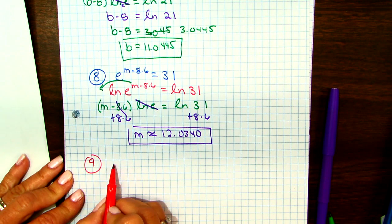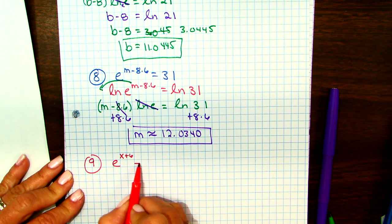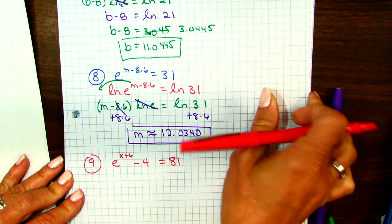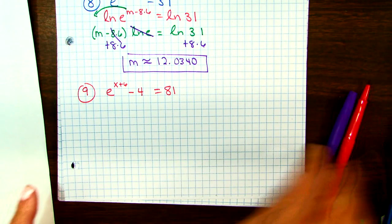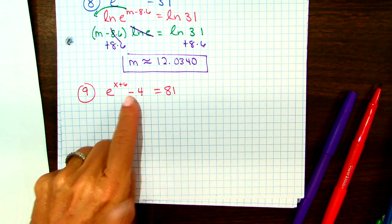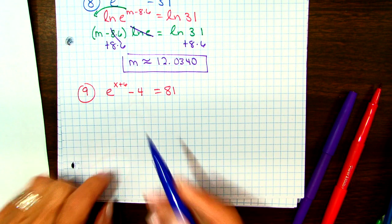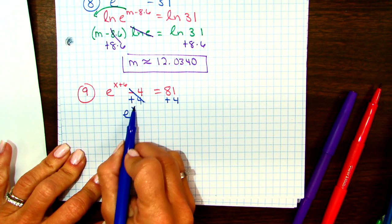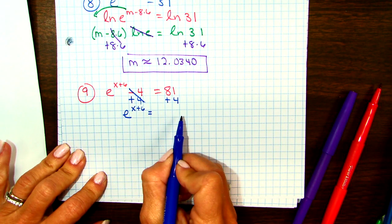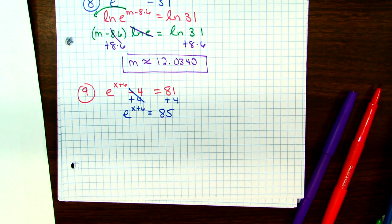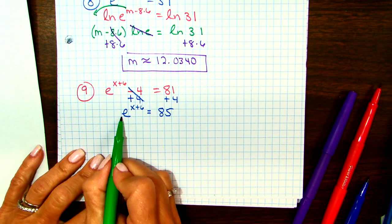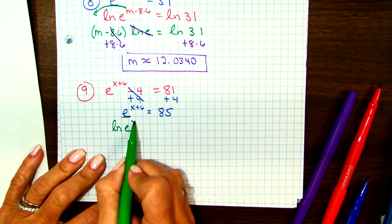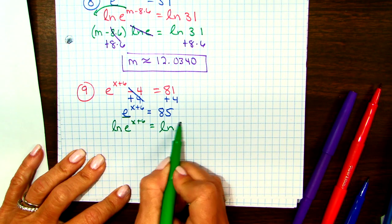E to the x plus 6 minus 4 equals 81. This one, notice, is different from 7 and 8 because it's got that minus 4 there. Before we start the problem, before we do the log part of the problem, we have to get that to the other side. Now, number 9 is exactly where 7 and 8 were when we started. We're going to take the log of both sides. Since it's a base e, I'll use natural log. Don't forget to give it to both sides.